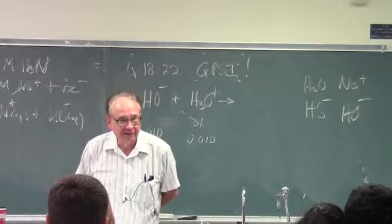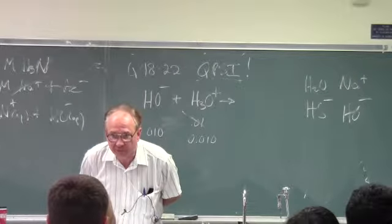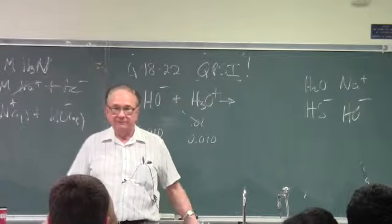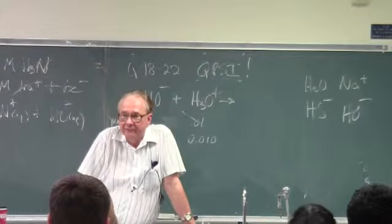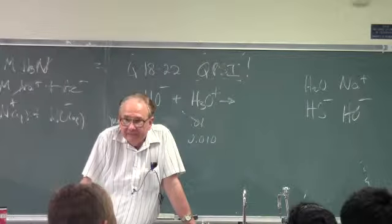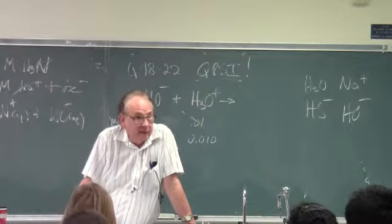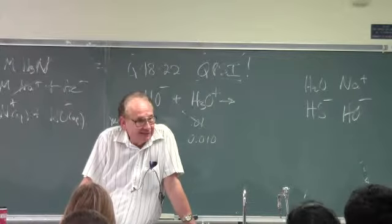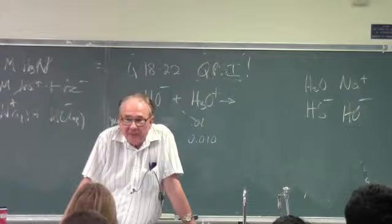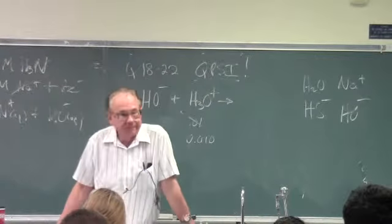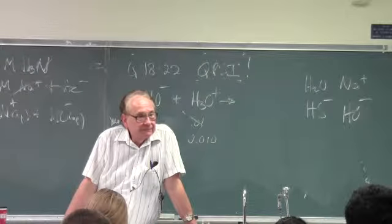Now, is the pH of this system therefore going to be the pH of straight water, 7.00? Yes or no? Why not? Because we still have the water and the... Water. I got the water. That's 7.00. HS minus. HS minus. Is the presence of HS minus going to give us a basic system or an acidic system? Acidic. Basic.